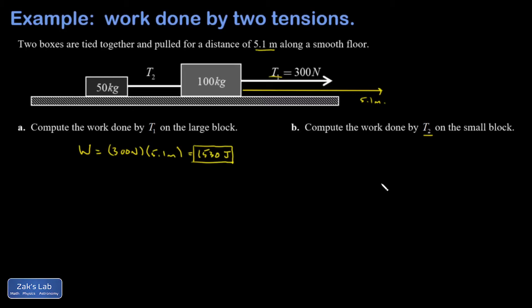The way you get this problem done is by saying T1 is responsible for accelerating 150 kilograms and I should be able to find the magnitude of that acceleration. So for the whole system, T1 is operating from the outside on this whole system 150 kilograms.